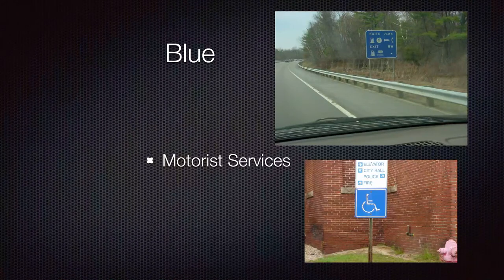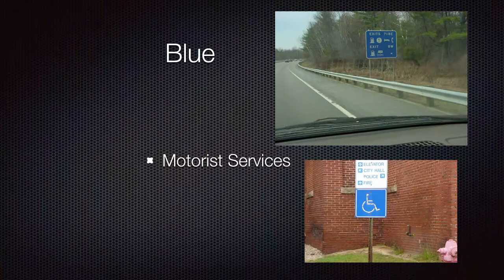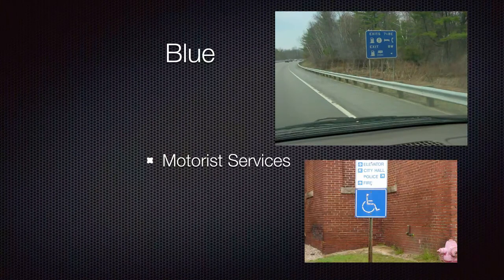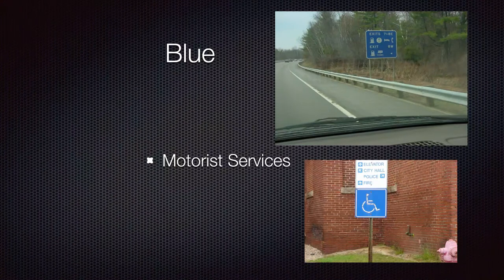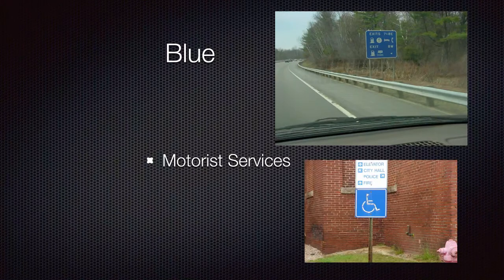Blue signs — most people know blue as handicap, but there are a whole bunch of motor services shown on blue signs. Examples include gas, food, lodging, telephone, camping, hospital, pharmacy — write this down: RX — and library. Most of the time we see blue signs on a highway, though sometimes in town as well, such as directing you toward a hospital.